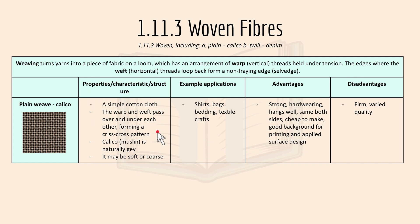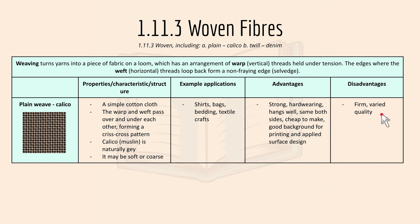Calico may be soft or coarse. Examples include shirts, bags, bedding, textiles, and crafts. Advantages: it's strong, hard-wearing, hangs well, looks the same on both sides, and is cheap to make. Disadvantages: it's firm and variable in quality.